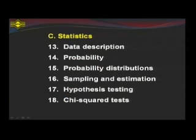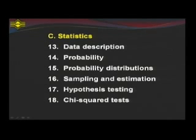The topic of probability includes the probability of a combined event, conditional probability, and the rule of total probability. Topic 15 covers discrete and continuous random variables. This topic also covers binomial, Poisson, and normal distributions.